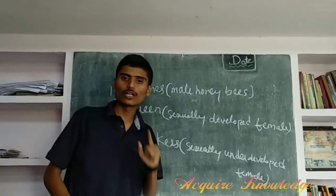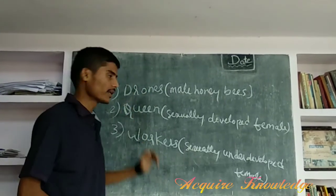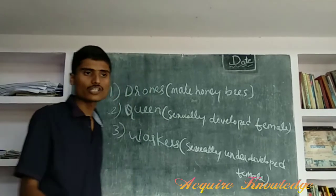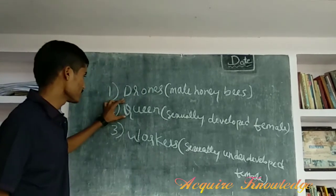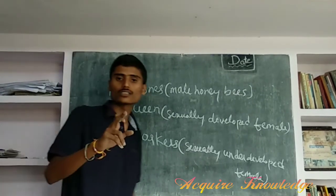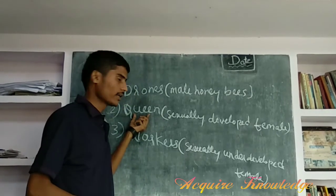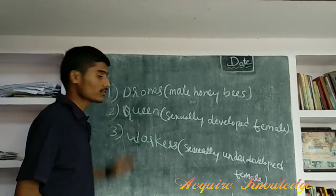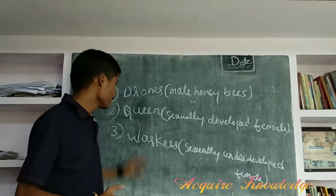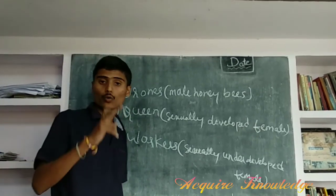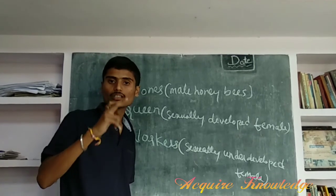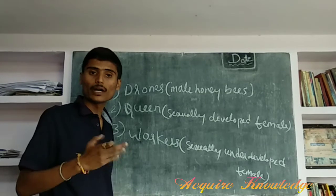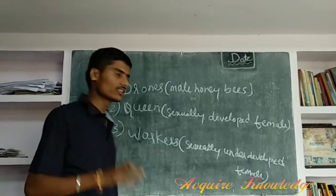Each colony has only one queen, surrounded by workers. The first primary purpose of the queen is to reproduce. In her lifespan, she reproduces only once or twice, but when she does, two lakh eggs are produced per year. This is a very high rate of production.